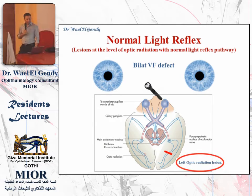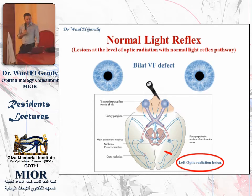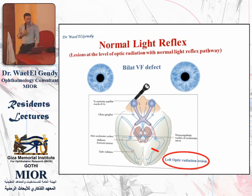Our next example is a lesion in the optic radiation. A lesion in the optic radiation, as we can see, is behind the light reflex pathway, so you will have a normal light reflex. Swinging the flashlight on both sides will give you normal pupillary reflexes — no movement, dilatation, or narrowing of the pupils will be seen. You will have a deficit of vision and visual field, but you will have normal pupils.